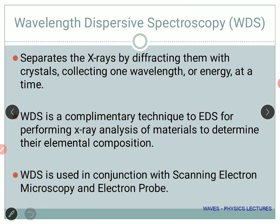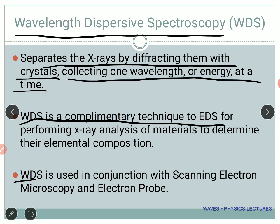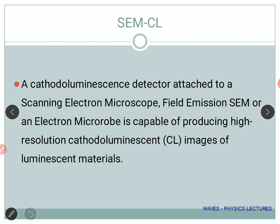Something complementary to EDS is WDS — Wavelength Dispersive Spectroscopy. Energy and wavelength are connected by the relation E = hν or hc/λ, so they are complementary to each other. Only the x-axis of the graph will vary — wavelength instead of energy. WDS basically separates the X-rays by deflecting them with crystals, collecting one wavelength or energy at a time. This WDS is used in conjunction with SEM or an electron probe.